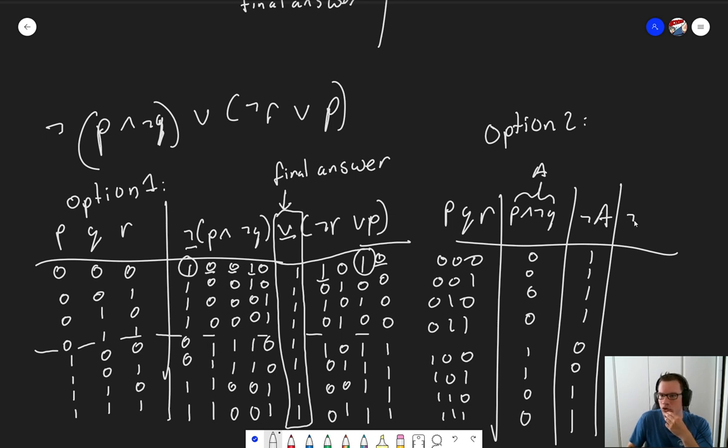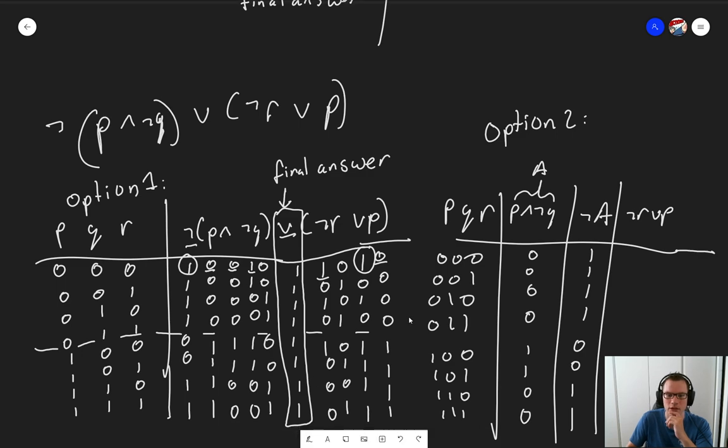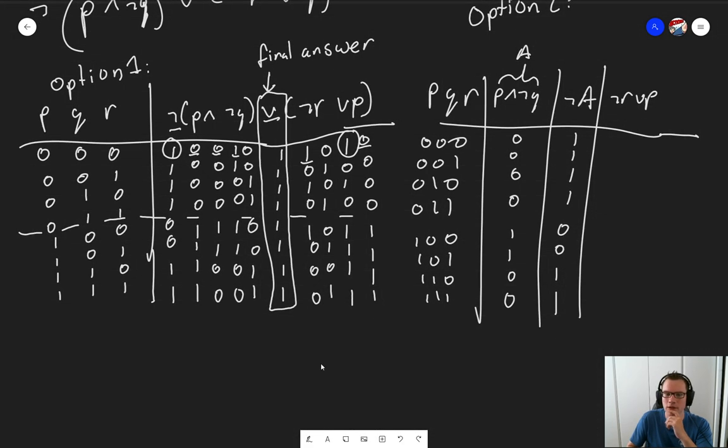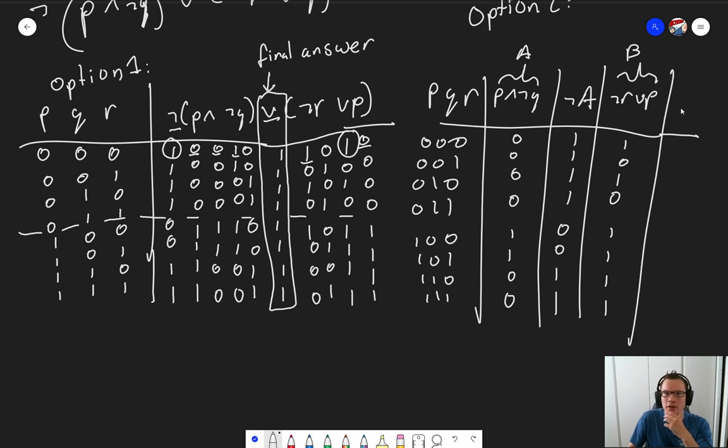We also need not R or P. Not R or P. So the bottom half is going to be 1s and not R. So this. We'll call that B. And our final step is then not A or B. Meaning we need these two columns. And it's an OR.